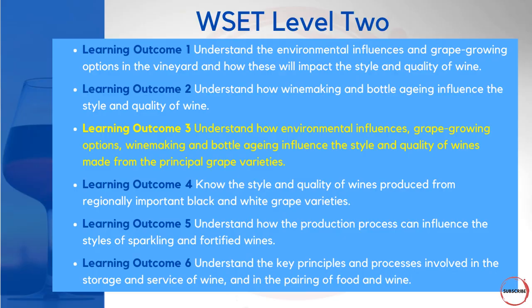Part 3 is all about learning outcome number 3, and there is an awful lot to unpack here. Learning outcome 3 is all about understanding the environmental influences, the grape growing options, the winemaking and bottle aging influences, and the style and quality of wines made from the principal grape varieties. A lot of attention needs to be paid to the varieties here, because this is where the bulk of the exam questions will come from.